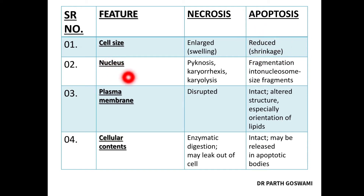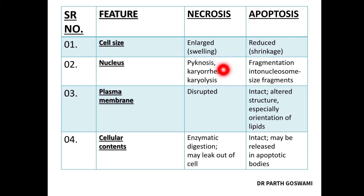The second difference is in the nucleus. In necrosis, you mainly have pyknosis, karyorrhexis, and karyolysis. Pyknosis means nuclear condensation, which can also be observed in apoptosis. Karyorrhexis involves fragmentation of the nucleus, and karyolysis means dissolution of the nuclear chromatin.